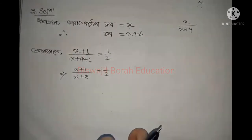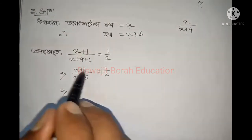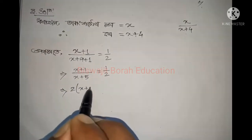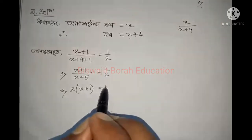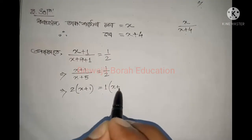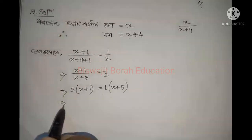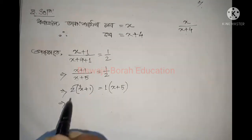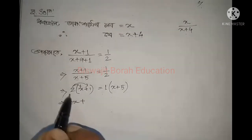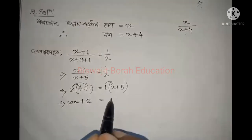Yu equal one by two. Two bracket at x plus one equal one, here bracket at x plus five, pouran, two re. So two bracket x plus one, yu haito pouran process plus equal one.